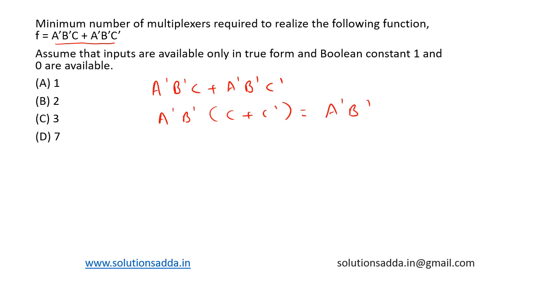Let's determine the minimum number of multiplexers required. Since inputs are available only in true form, we cannot directly derive A' or B'. However, we have constants 1 and 0 available.